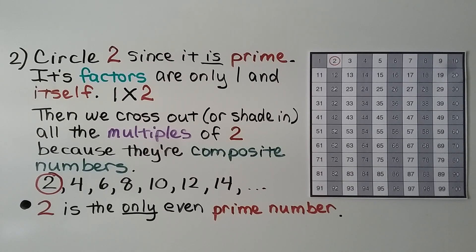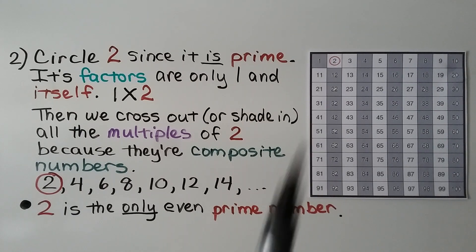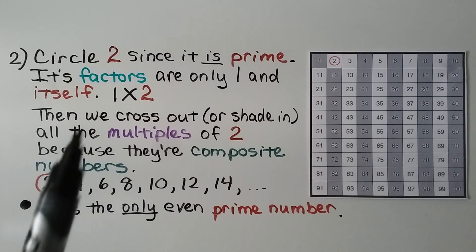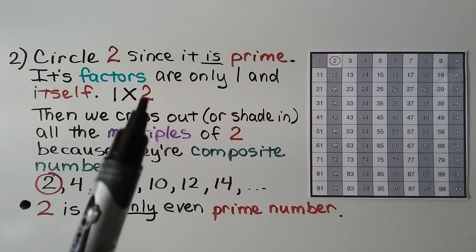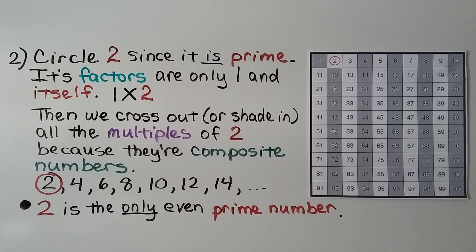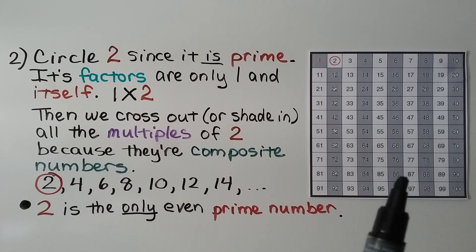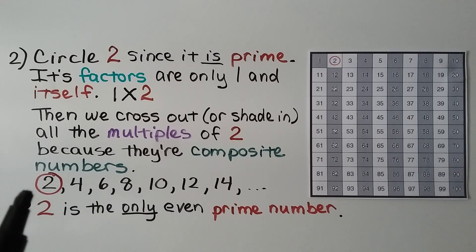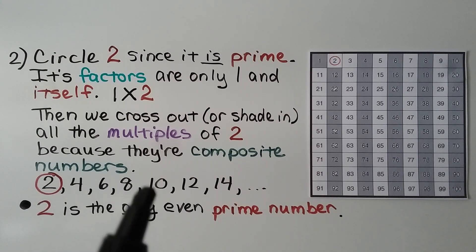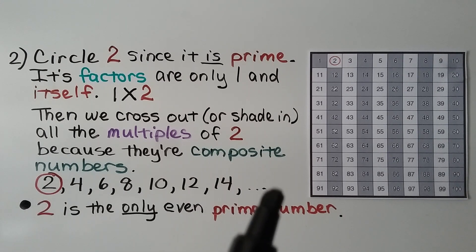The next step is we circle the number 2, since it is prime — its factors are only 1 and itself, as 1 times 2 is 2. Then we cross out or shade in all the multiples of 2 because they're composite numbers. The multiples of 2 are 4, 6, 8, 10, 12, 14, and so on.